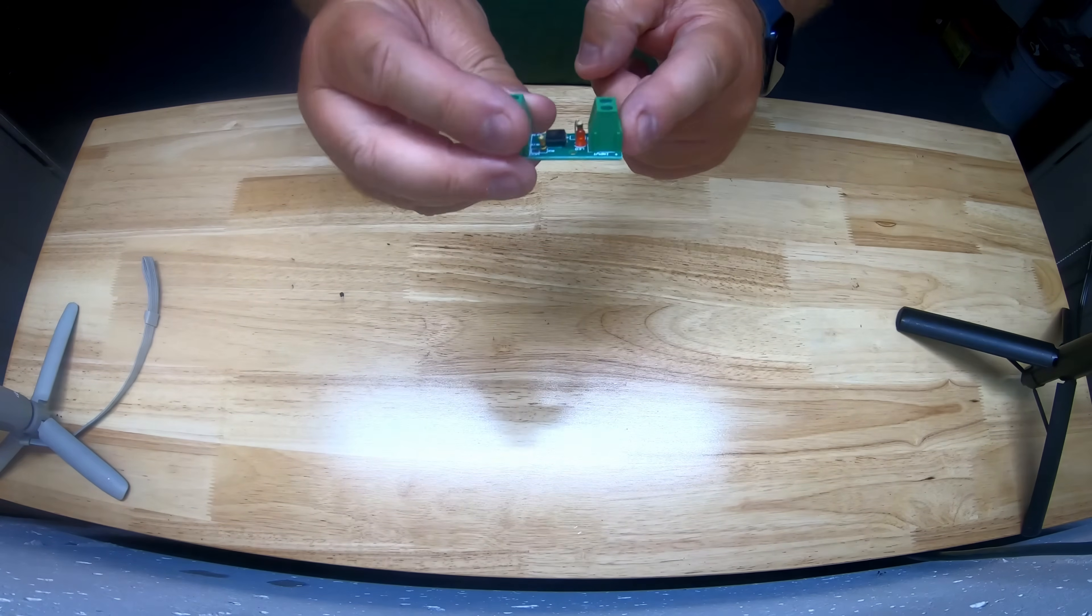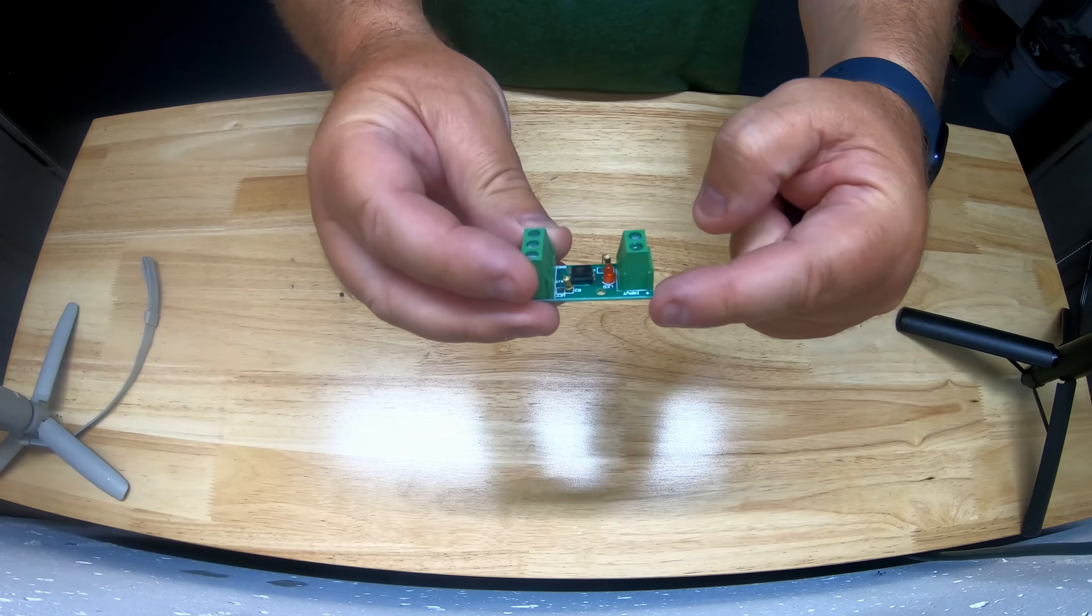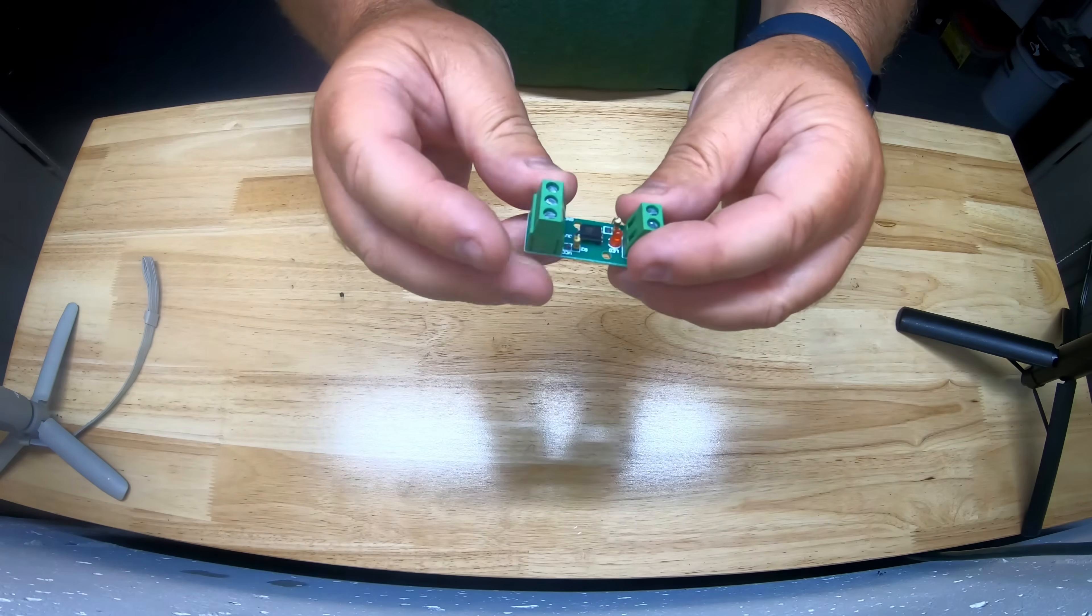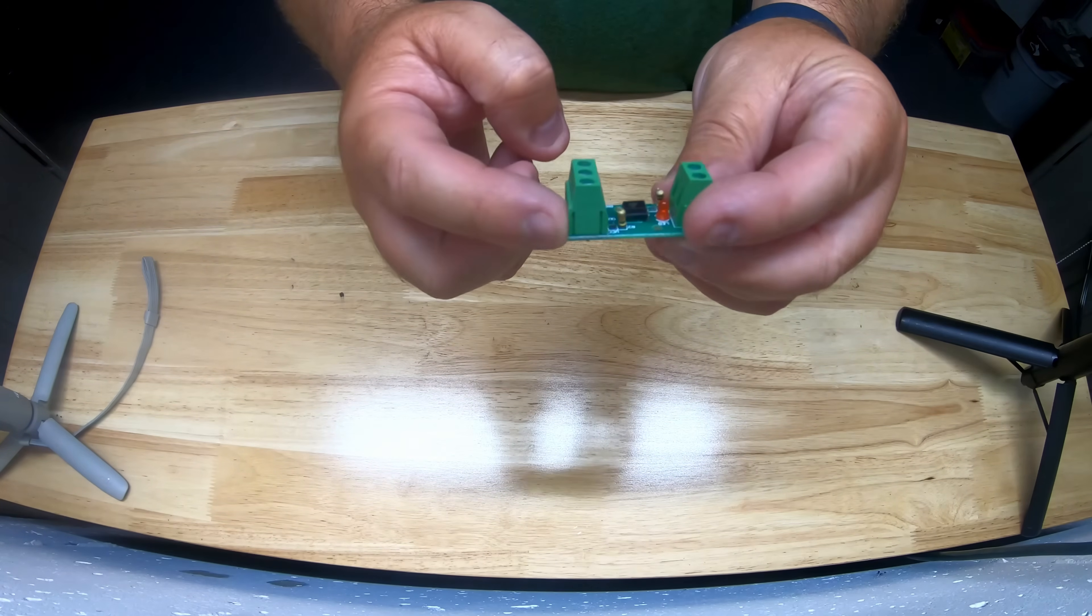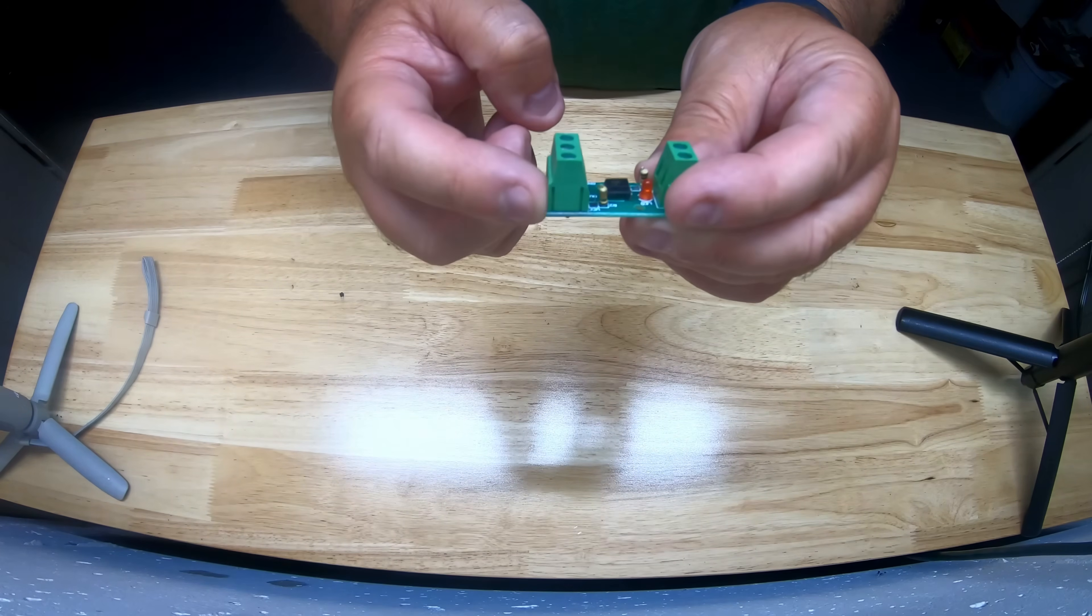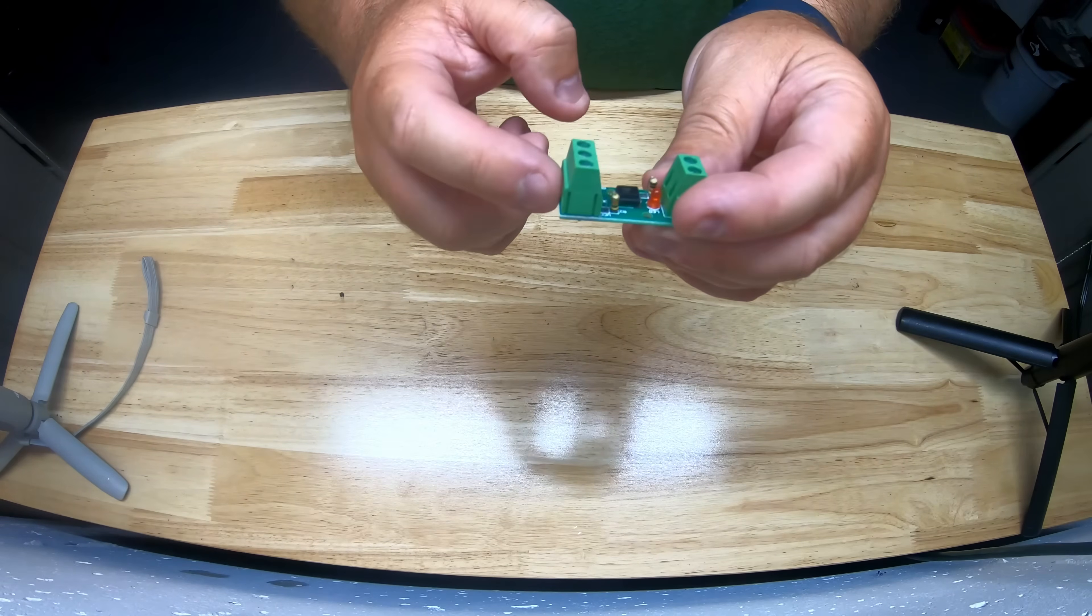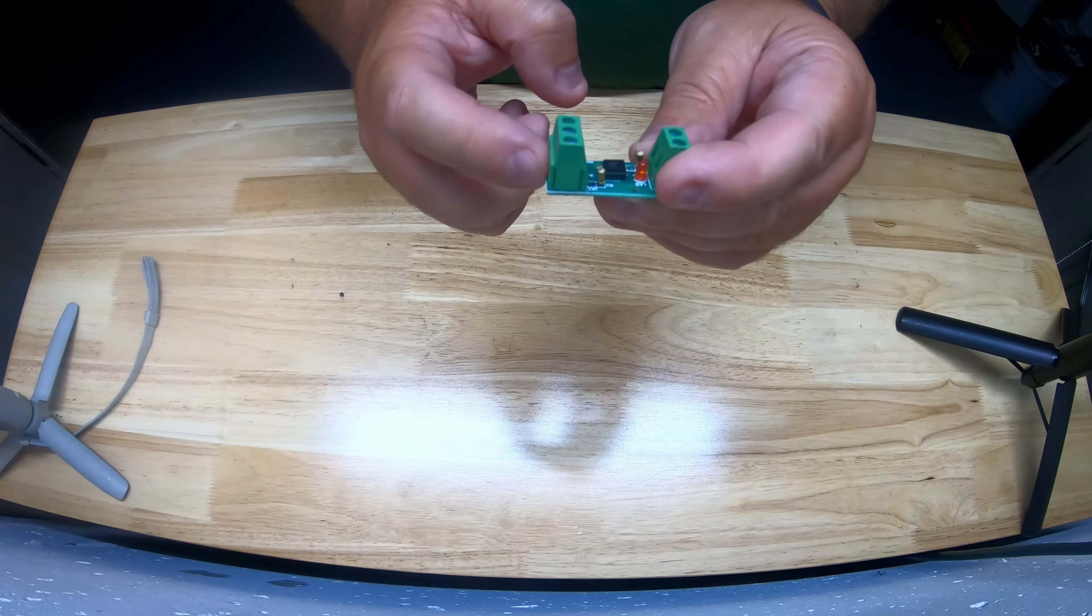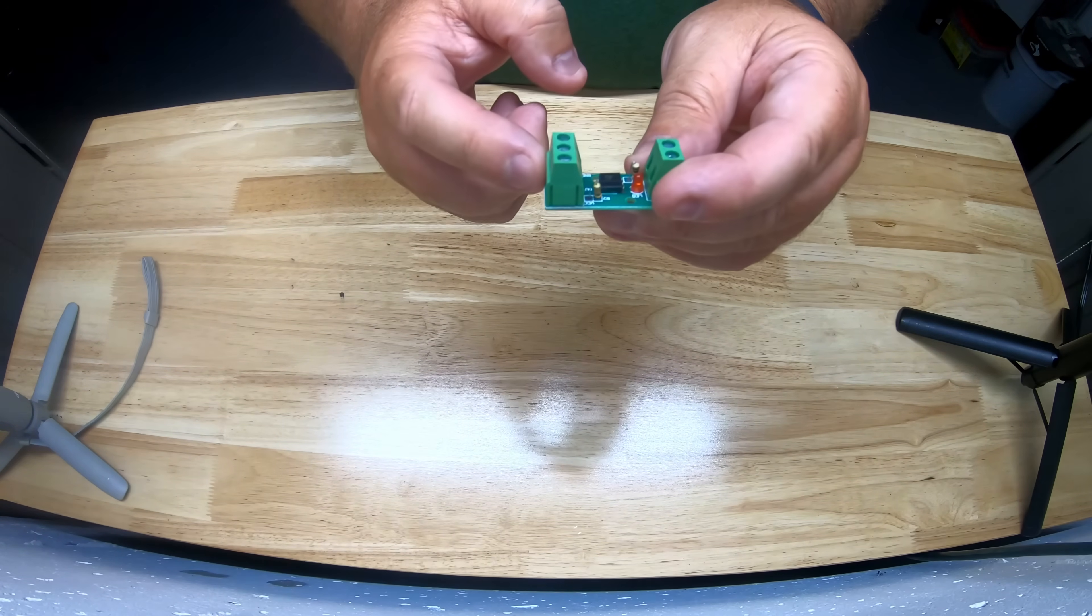The two terminals on this side are connected to data on the input, input plus, and then ground on this side. On the opposite side you have VCC which is connected to a 3.3 volt pin on the Raspberry Pi, output which is connected to the GPIO pin that you've selected for the data to go to, and ground which is connected to a ground pin on the Raspberry Pi.